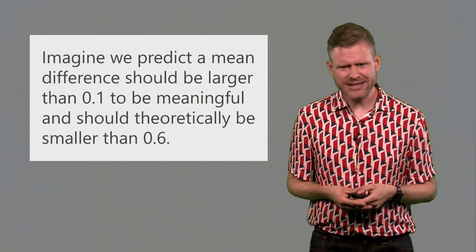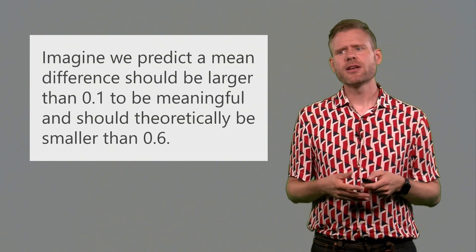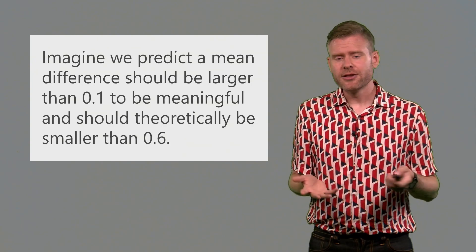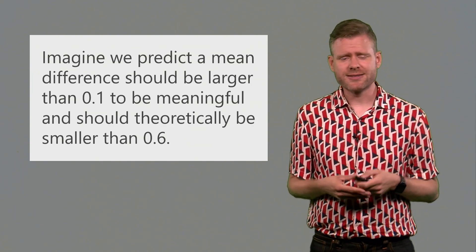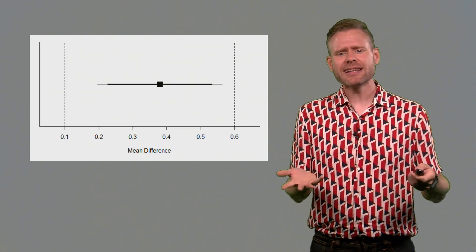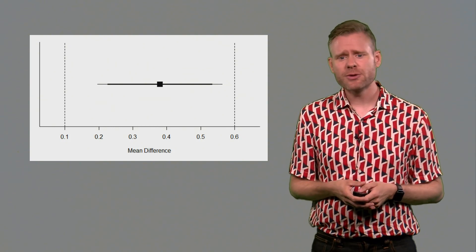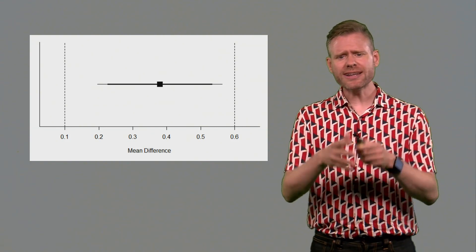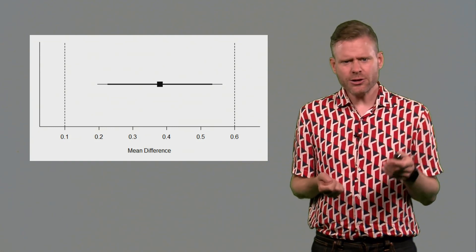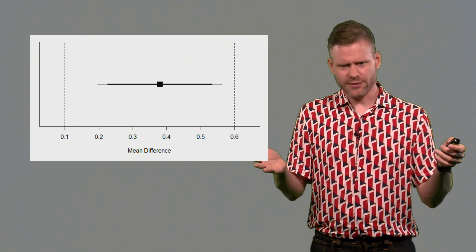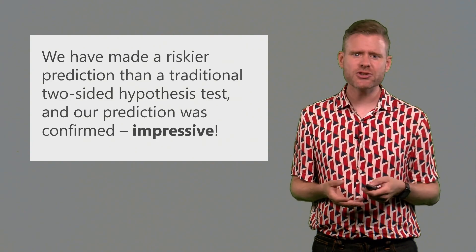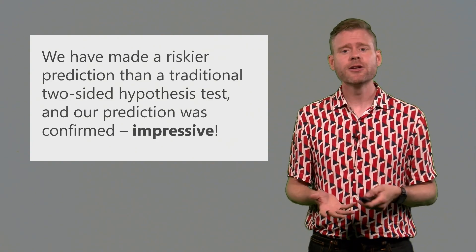Now imagine that we make a slightly more risky prediction. We have two groups and we predict a mean difference should be larger than 0.1 on some scale that we're using, to be practically meaningful to begin with. And theoretically, the value that we observe should also be smaller than 0.6, because this is just too large to be predicted by our theory. So we are predicting values within a certain range between 0.1 and 0.6. We collect some data, then we perform a hypothesis test, or in this case we might just look at the mean value of about 0.38. We look at the confidence interval around this, and we see that we can reject both this upper bound in our range prediction of 0.6 as our lower bound of 0.1. So we can reject both of these values. The data that we have observed is statistically within a range that we predicted. So we have made a riskier prediction than in a traditional two-sided hypothesis test. And our prediction was confirmed, which is really impressive.